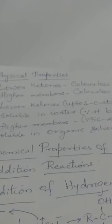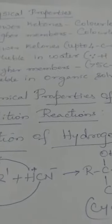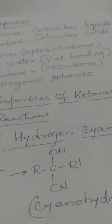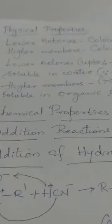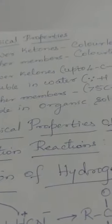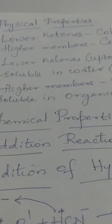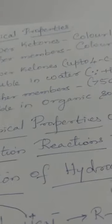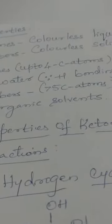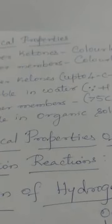Now coming to the physical properties. The lower ketones up to 4 carbon atoms exist as colorless liquids, whereas higher members with greater than 5 carbon atoms exist as colorless solids. Lower ketones up to 4 carbons are soluble in water because of their ability to form hydrogen bonds with water molecules, whereas higher members are insoluble in water but soluble in organic solvents like alcohol and ether.